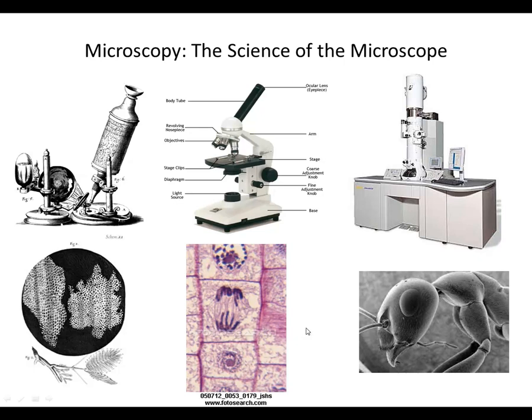The microscope in the middle is the kind we will be using in class. It's called the compound light microscope; it allows us to see fairly good cellular details and we can magnify objects up to about 400 times. To the right we have an electron microscope, which is extremely special — it allows us to magnify hundreds of thousands of times to produce extremely vivid images of very minute details.